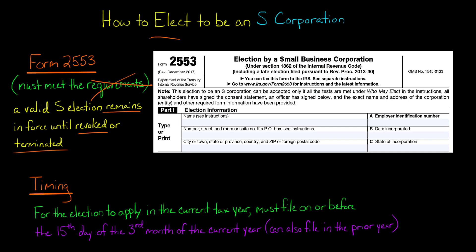So you don't have to file Form 2553 every single tax year. You make the filing once, and assuming it's a valid S-Election, you're going to be an S-Corp until you either do something to get it revoked or you terminate the S-Corp status.